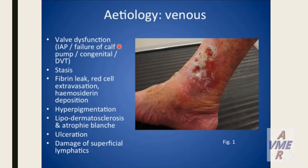After increasing ambulatory venous pressure, we have stasis and extravasation of red blood cells, which contain hemosiderin. Hemosiderin can cause pigmentation. Engulfment of the hemosiderin particles by macrophages would induce inflammation, causing hyperpigmentation, lipodermatosclerosis, and fibrosis. Later on, this devitalized non-healthy skin would have breaking of the epidermis and cause ulceration. We also have damage of the superficial lymphatics.